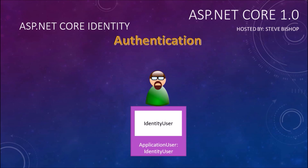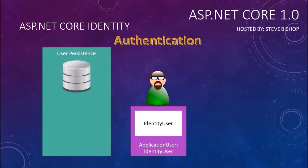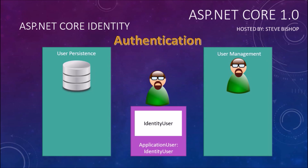Once we have this ApplicationUser class, we need to store it somewhere. We need some sort of user persistence — typically a database that manages where the users are stored and all the different users that might be allowed to be authenticated. On the user persistence side, we have something called an IdentityDbContext of type T. We also need some sort of user management — a way of allowing the user to log in and log out and manage those claims.